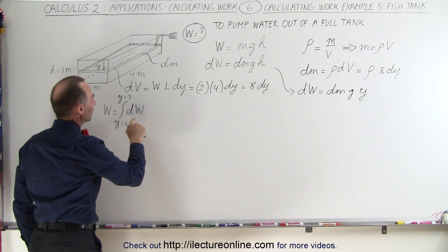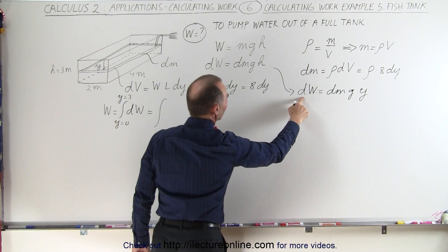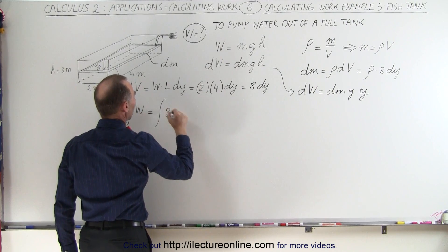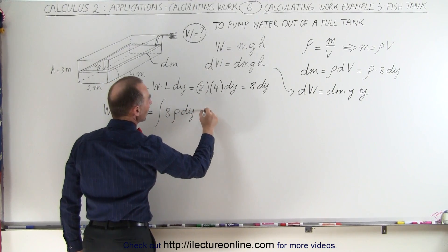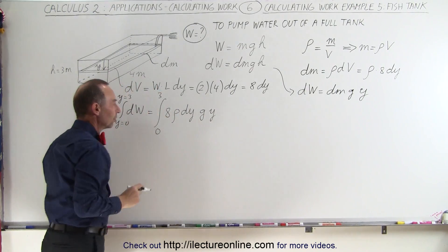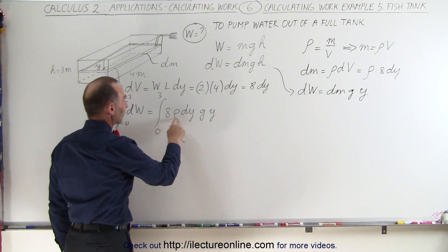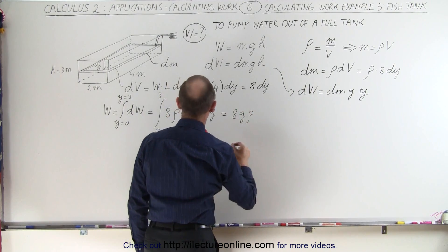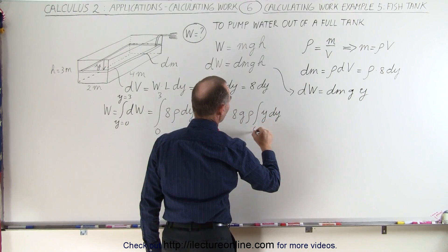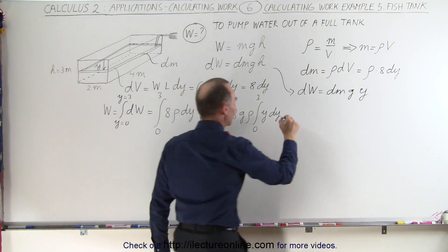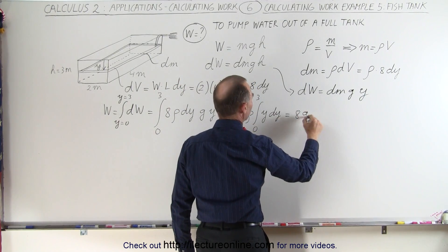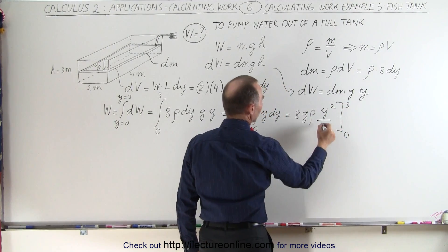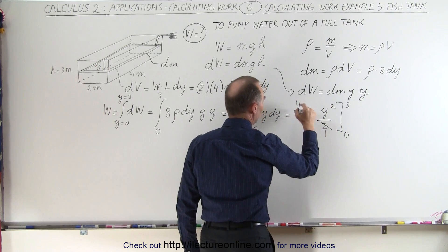When we sum up all the dws, this equals the integral from zero to three of dm times g times y, where dm is 8ρdy. So we have the integral of 8ρg·y dy from zero to three. Taking out the constants, this is 8gρ times the integral of y dy from zero to three, which equals 8gρ times y²/2 evaluated from zero to three. The two and eight cancel, giving us a four.